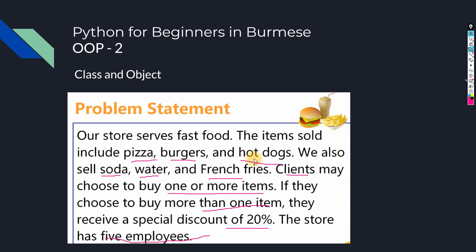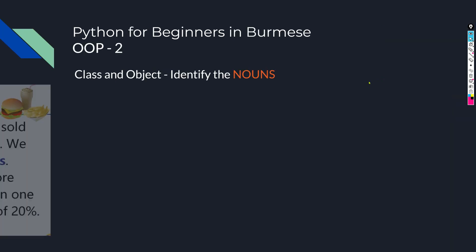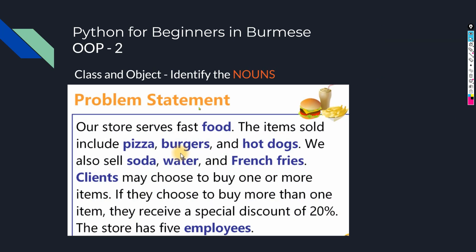Now, to design the software, we identify the nouns in the problem statement. The nouns include: pizza, burger, hot dogs, items sold.